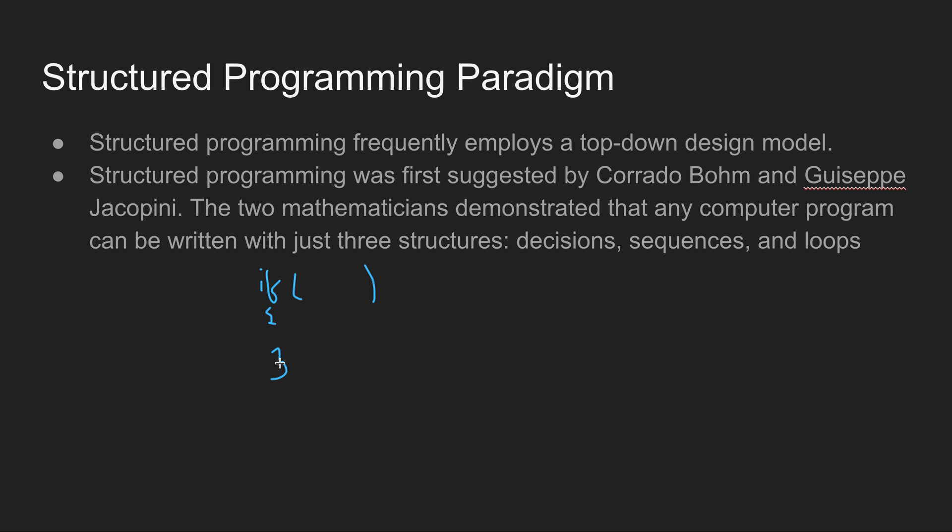For example, if there is some condition like if your age is equal to or above 18 and you are eligible to vote. If some condition is satisfied, it follows some separate flow of code. If that condition is not satisfied, there would be some separate flow. That is called decisions.